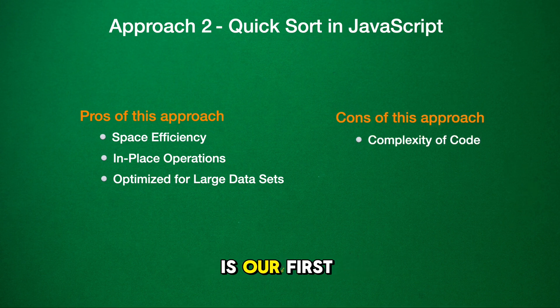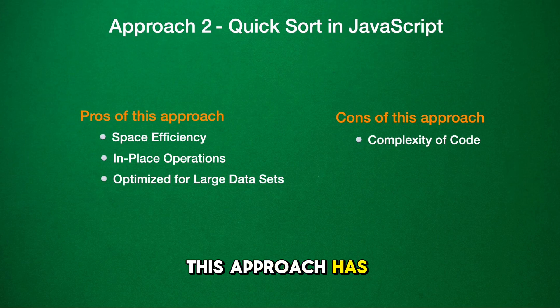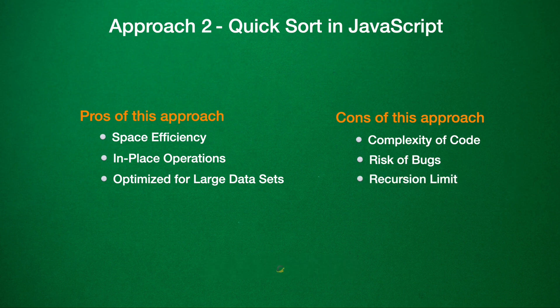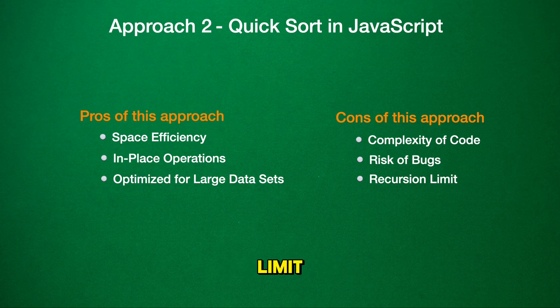Let's turn to the cons. Complexity of code is our first one. This approach has more moving parts, and with complexity comes the greater need for precision. With that, we have the risk of bugs. More complexity means more chances for little critters to slip into your code. And lastly, the recursion limit. While recursion is a nifty trick, if your array is too long, you might hit a system stack limit.